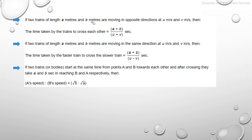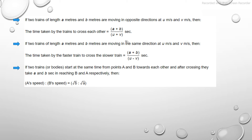If two trains of length A meters and B meters are moving in opposite directions at u meters per second and v meters per second, the time taken by the trains to cross each other is (A plus B) divided by (u plus v). This is the total length of the trains divided by the relative speed. Similarly, if they are moving in the same direction, the relative speed is subtracted, giving time as (A plus B) divided by (u minus v).